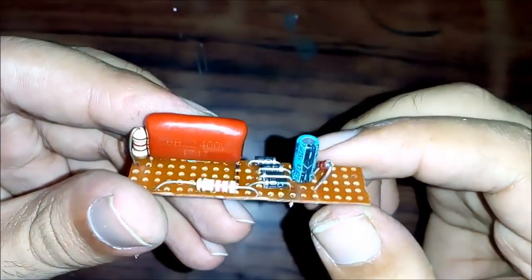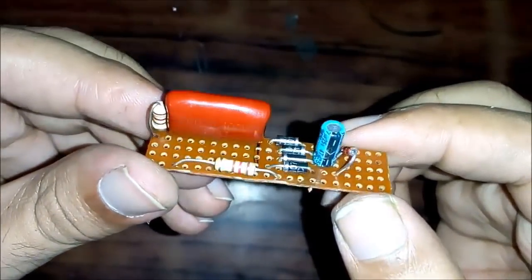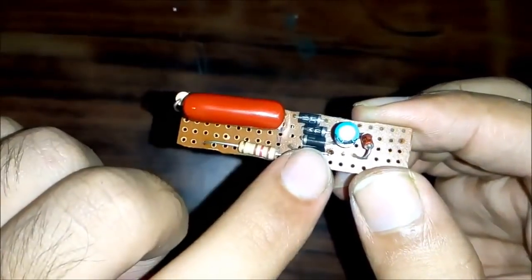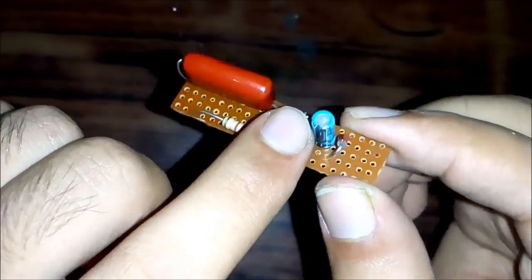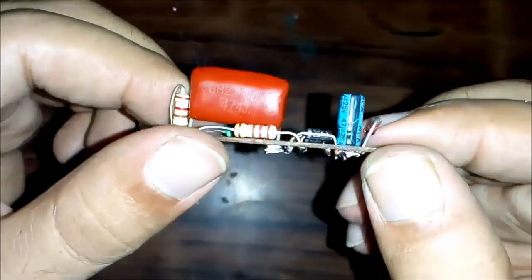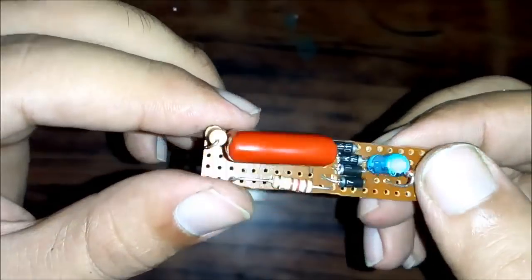Now I have soldered each and every component. As you can see there is a resistor, there is a resistor, there is a bridge rectifier, this is the capacitor, the electrolytic capacitor, this is the zener diode. So next I will show you how to use it.